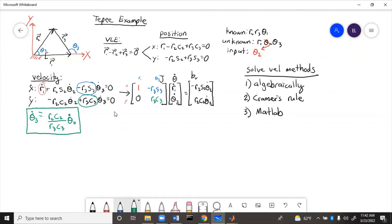And now that we know theta 3 dot, we can solve for R1 dot by just moving everything else to the other side of the equals in that X dot equation and then substituting in what we found for theta 3 dot.